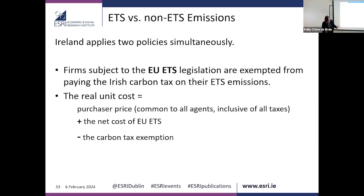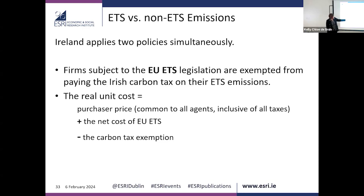In the model, we distinguish between ETS and non-ETS emissions. For some production sectors, emissions fall completely under the ETS — such as electricity generation or aviation. For most sectors, a share falls under the ETS and a share under the carbon tax, because large firms in a sector fall under the ETS while small ones don't. The real unit cost of carbon for each sector is its purchase price adjusted by the net ETS cost and reduced by the carbon tax exemption.